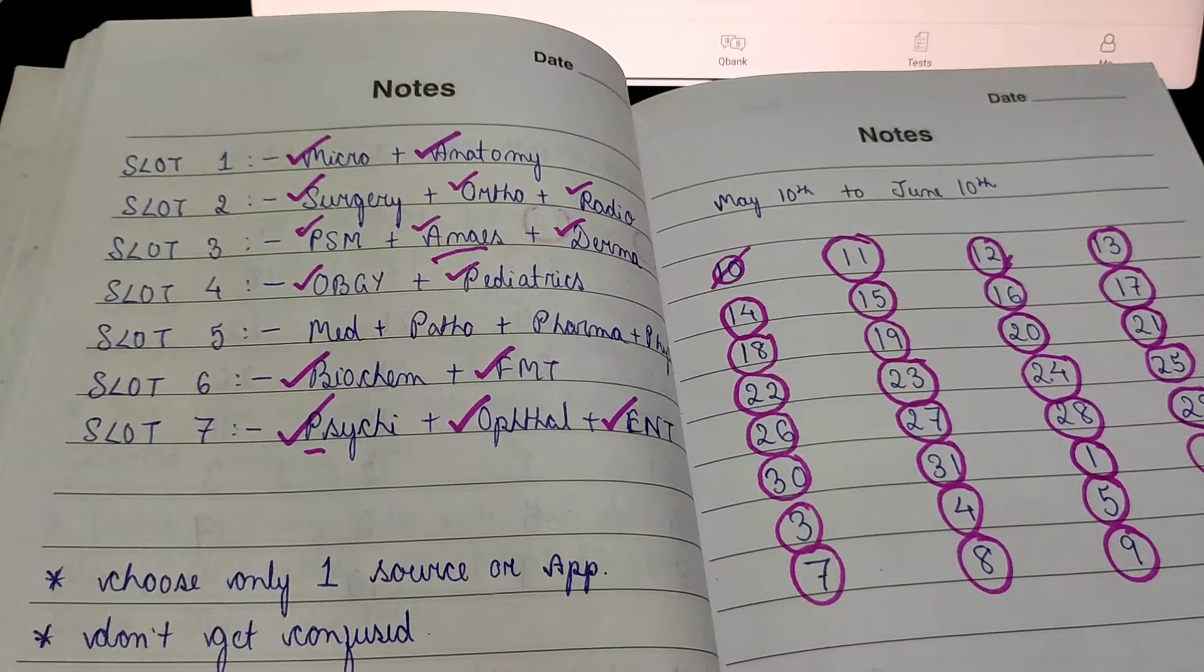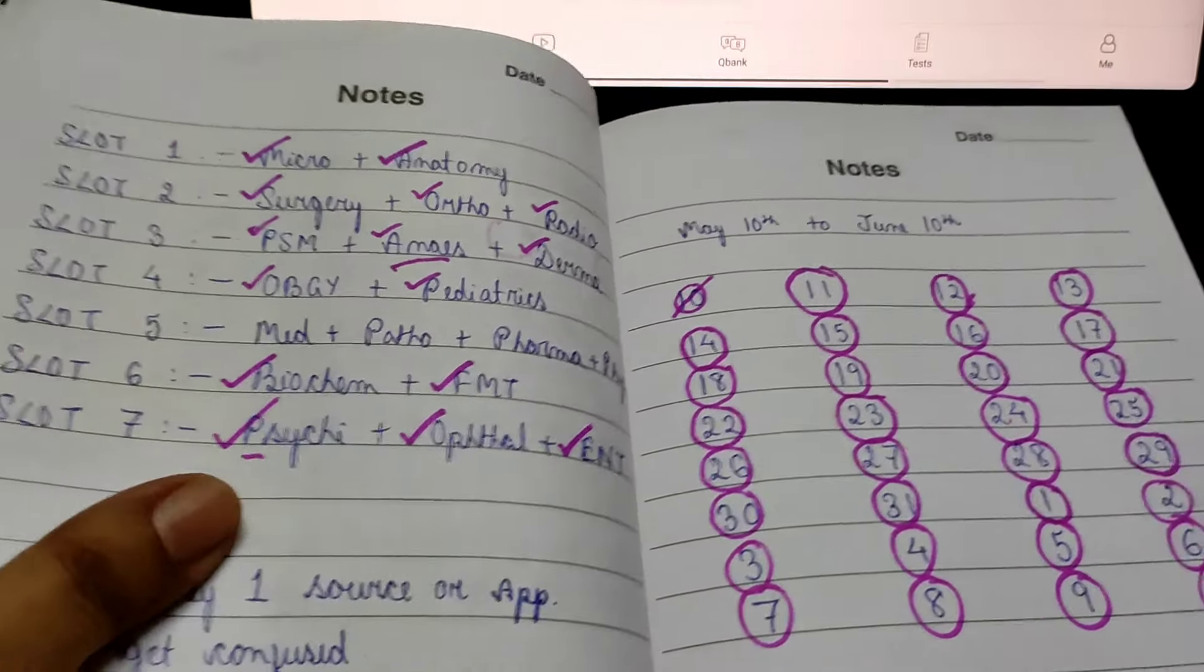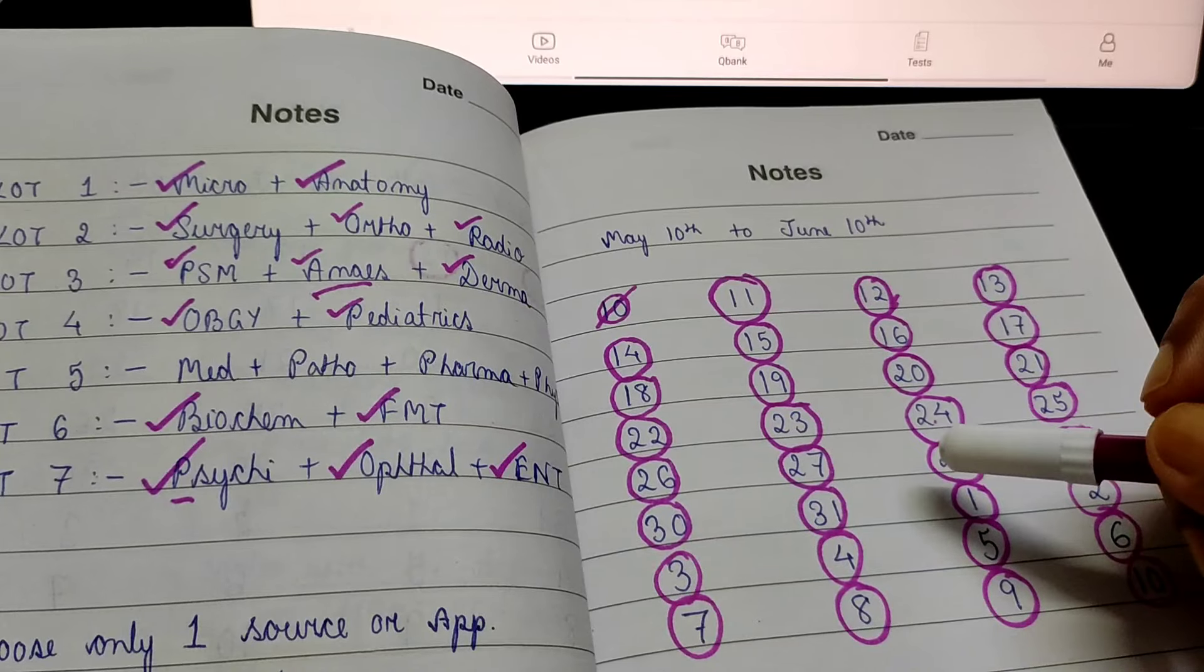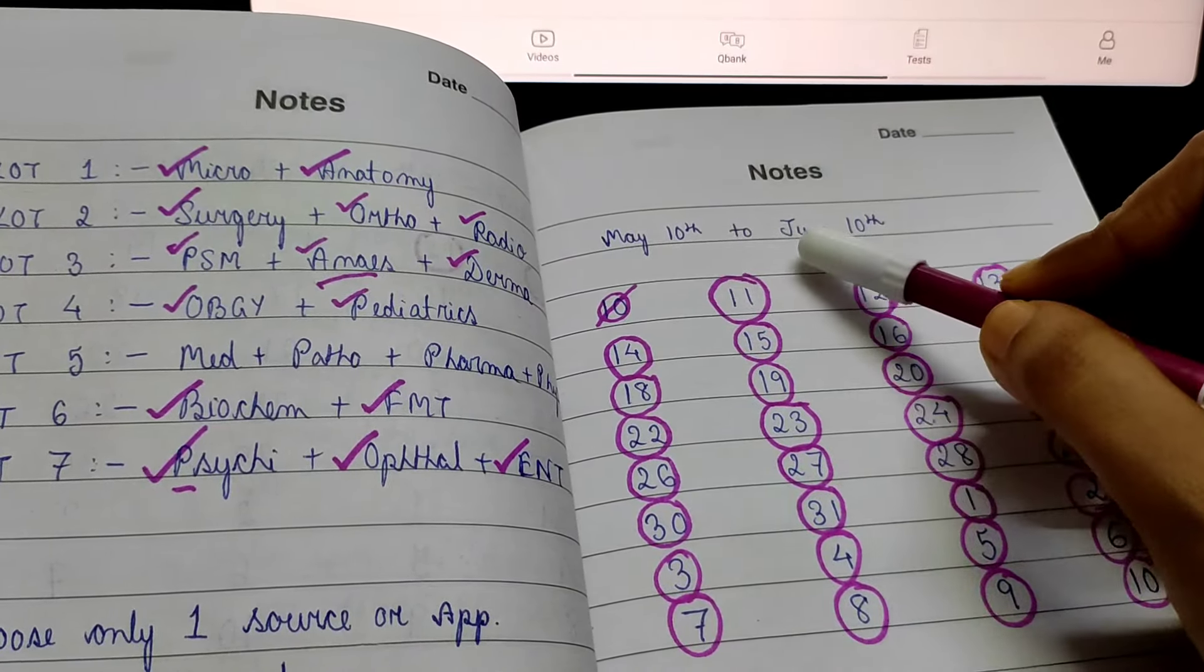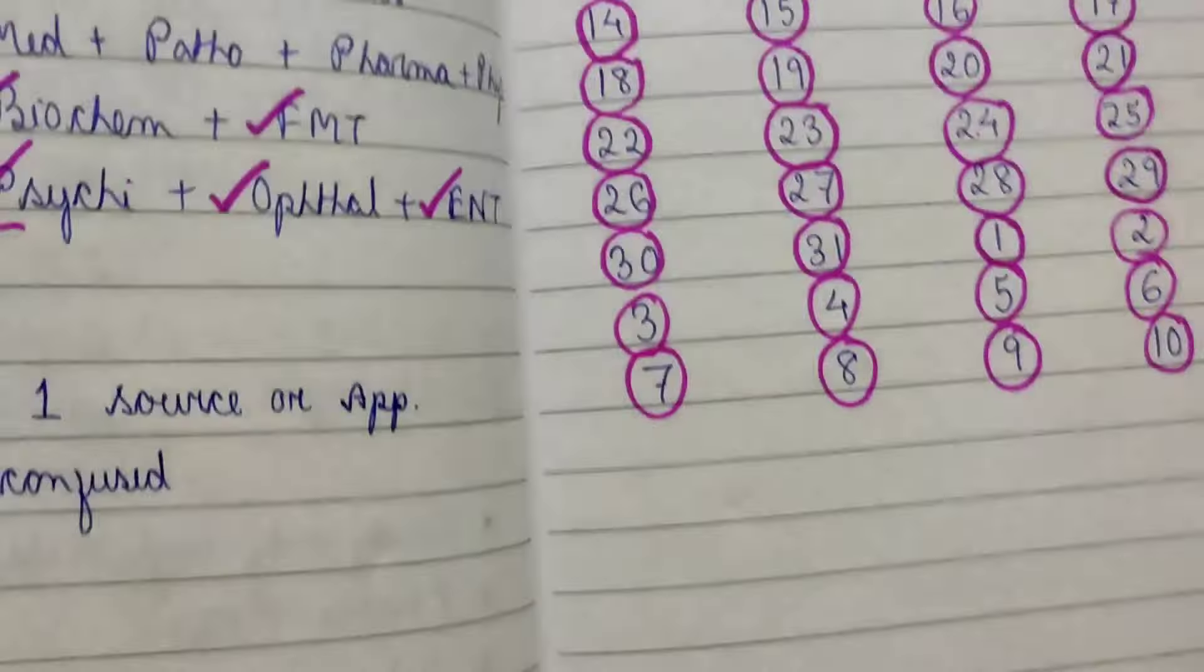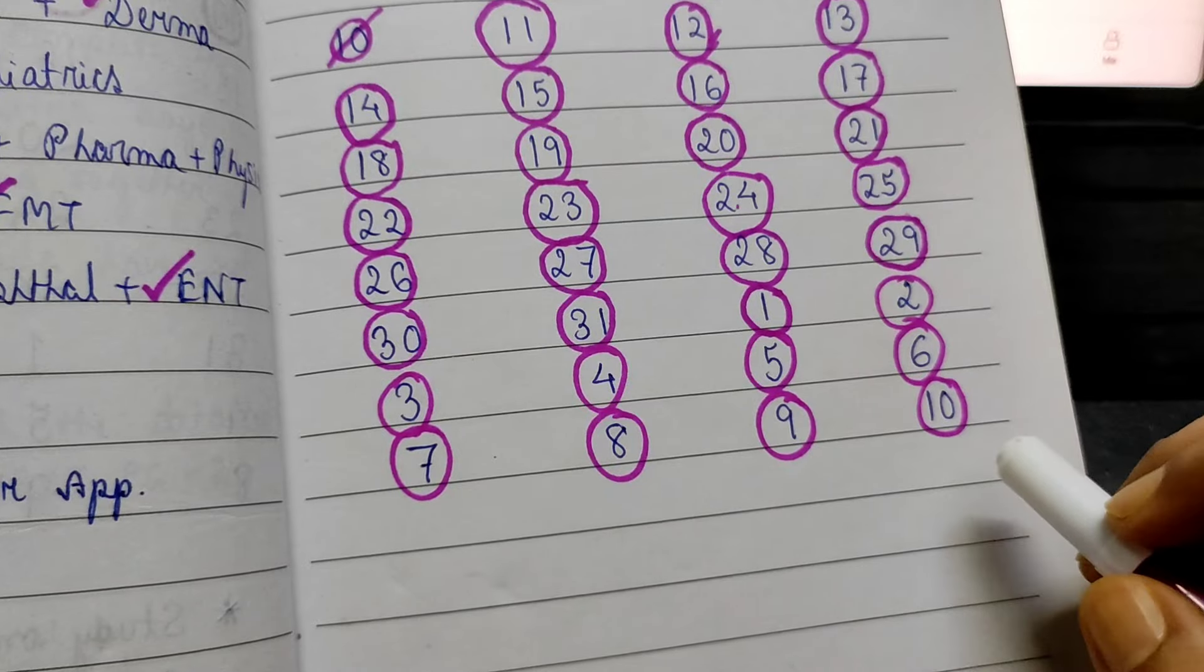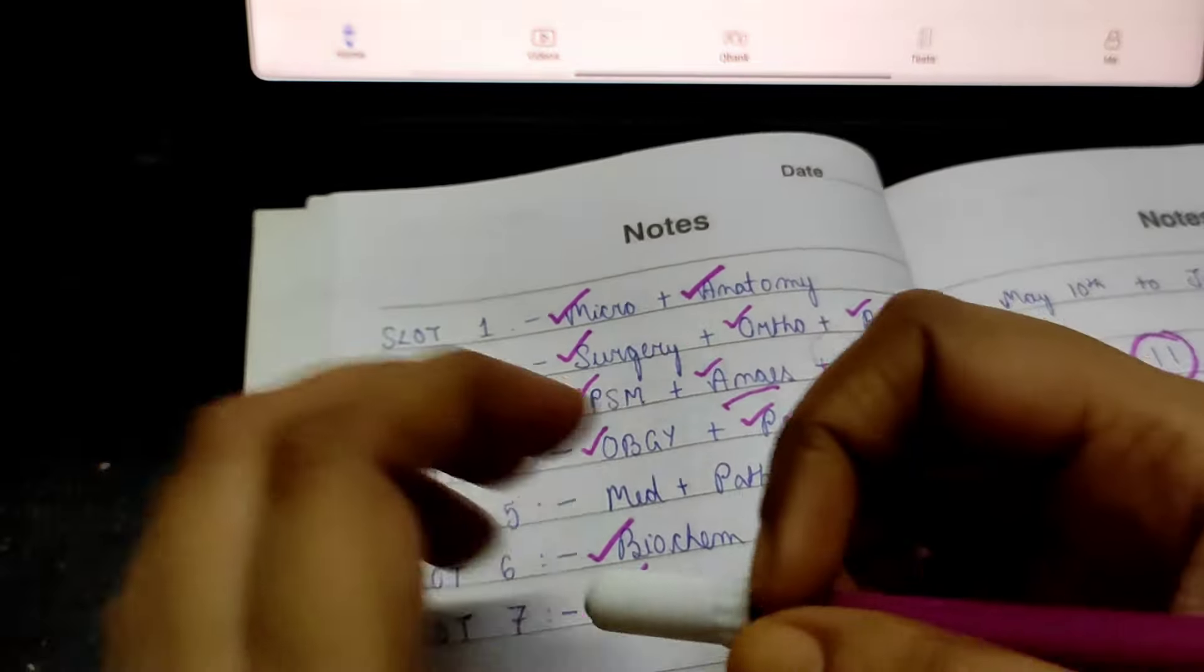Hello everyone and welcome to my series, let's crack NEET PG 2024 together. As we had planned earlier, we will complete studying all the subjects, all the high-yield topics, from May 10th to June 10th. Today is exactly 10th of June and today is the 32nd day of our preparation and the final day, and we are done with the most vast slot of our schedule, that is slot 5.